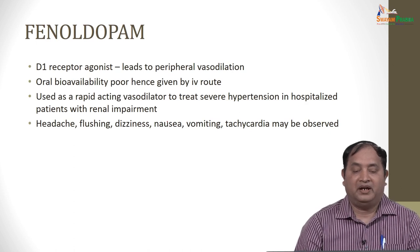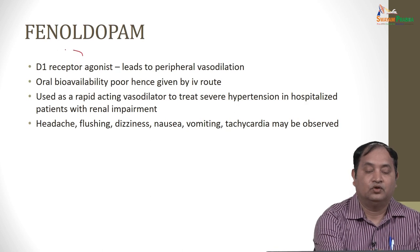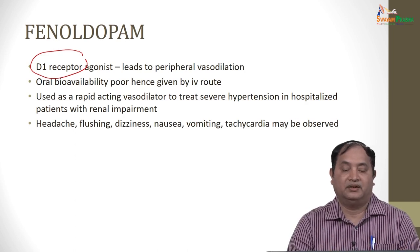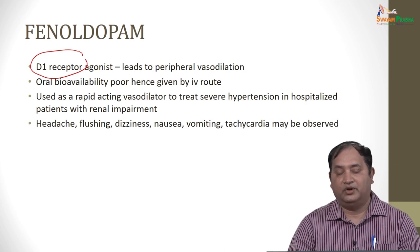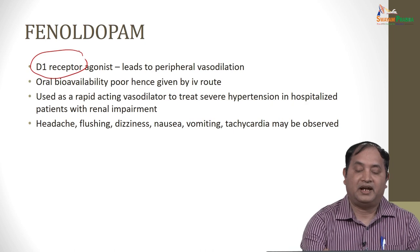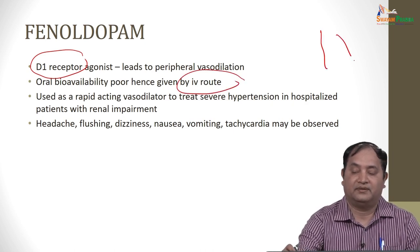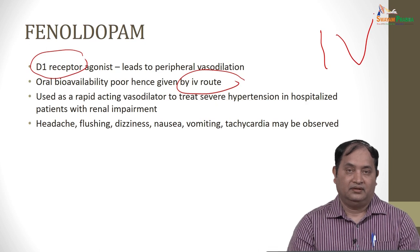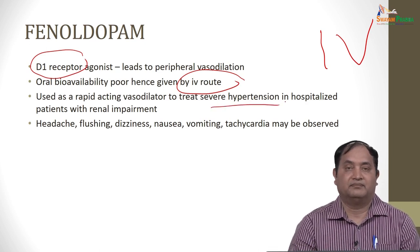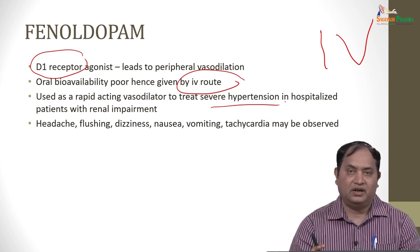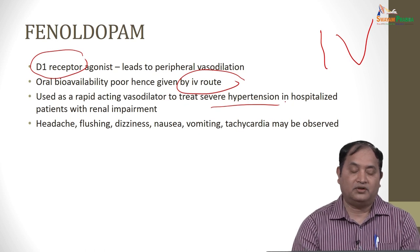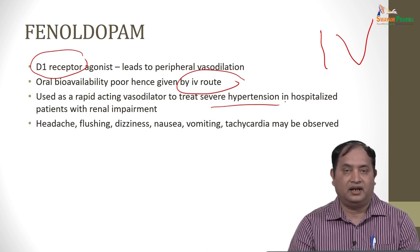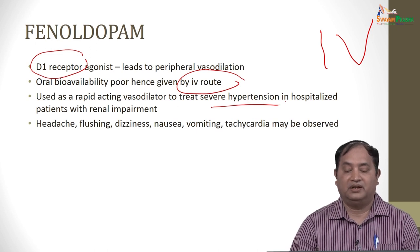Fenoldopam is a dopamine 1 receptor agonist that causes peripheral vasodilation. It has poor oral bioavailability and is given intravenously. It is a rapidly acting vasodilator used in very severe hypertension in hospitalized patients, particularly those with renal impairment. Common side effects include headache, flushing, dizziness, nausea, vomiting, and tachycardia.